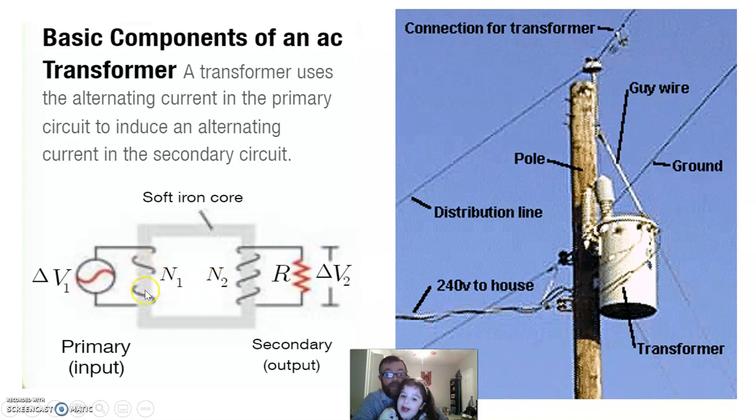So, you see we've got a couple of turns of wire here, a lot of turns of wire here, and a soft iron core. By using this setup, we can transform a lot of voltage to a smaller voltage.